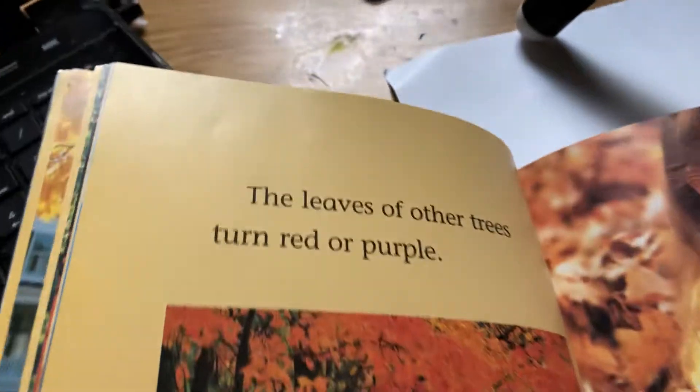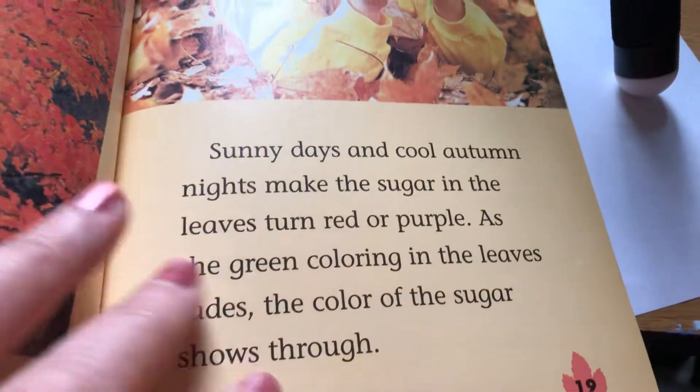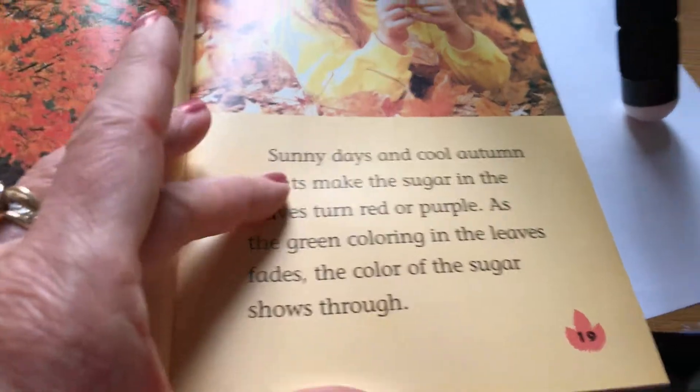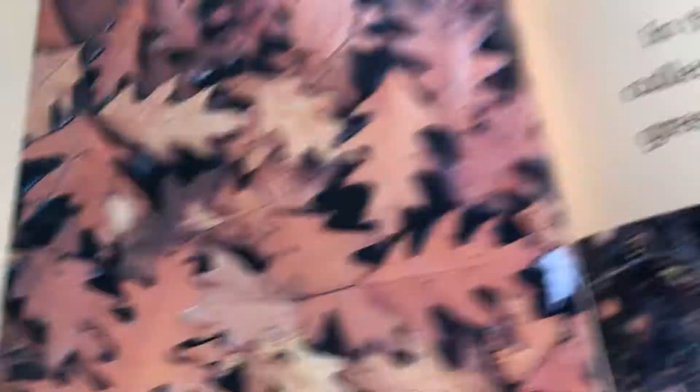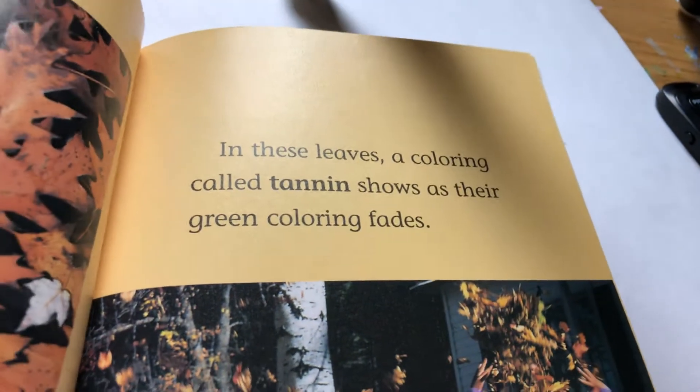The leaves of other trees turn red or purple — those beautiful maples are just glowing right now. Sunny days and cool autumn nights make the sugar in the leaves turn red or purple. As the green color fades, the color of the sugar shows through. Some leaves will turn a tan or a brown — those are the oak trees.